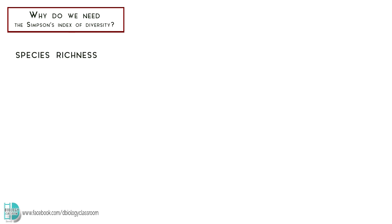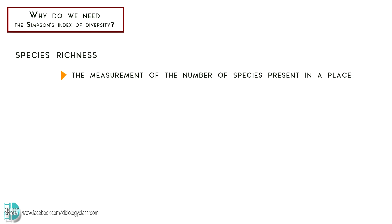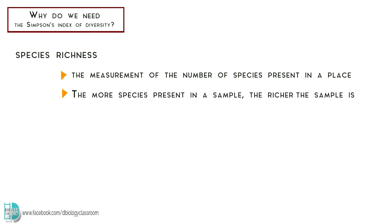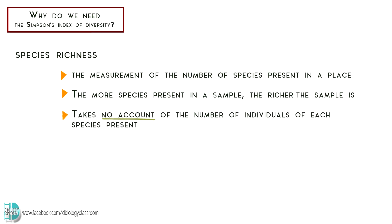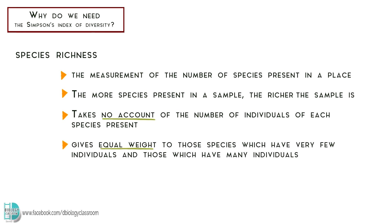Species richness is the measurement of the number of species present in a place. The more species present in a sample, the richer the sample is. This measurement takes no account of the number of individuals of each species present.